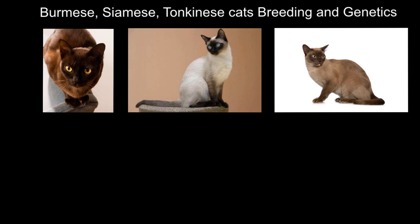On the left we have Burmese, this is Siamese, and this is Tonkinese. Burmese and Siamese are pure breeds, but Tonkinese, though considered a breed, is actually a crossbreed of these two pure breeds.